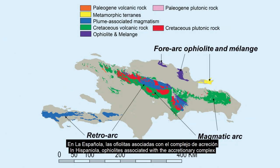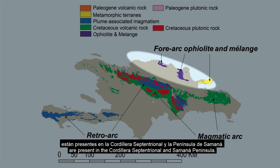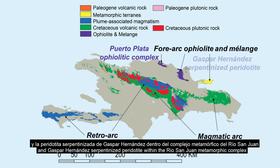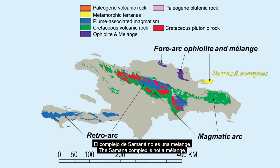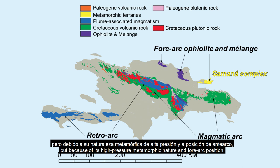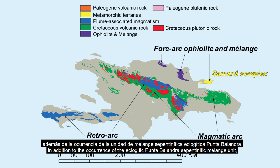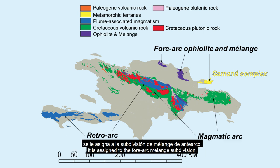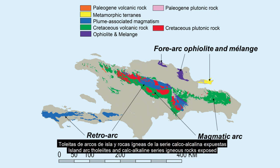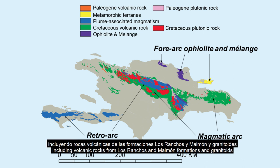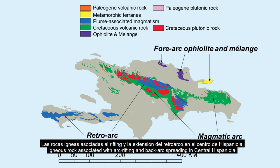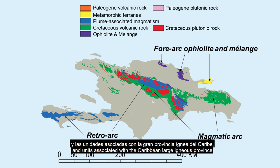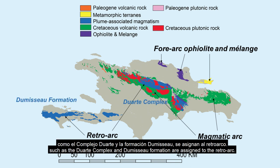In Hispaniola, ophiolites associated with the accretionary complex are present in the Cordillera Septentrional and Samaná Peninsula. The Puerto Plata ophiolitic complex and the serpentinized peridotite within the Rio San Juan metamorphic complex are assigned to the forearc ophiolite. High-pressure accretionary wedge materials within the Septentrional Cordillera are assigned to the forearc mélange. The Samaná complex is assigned to the forearc mélange subdivision due to its high-pressure metamorphic nature and forearc position. Island arc tholeiitic and calc-alkaline series igneous rocks, including volcanic rocks from Los Ranchos and the Maimon Formations and granitoids, are included in the magmatic unit. Igneous rocks associated with arc rifting and back-arc spreading in central Hispaniola, and units associated with the Caribbean Large Igneous Province such as the Duarte complex and Dominican Formations, are assigned to the retroarc.